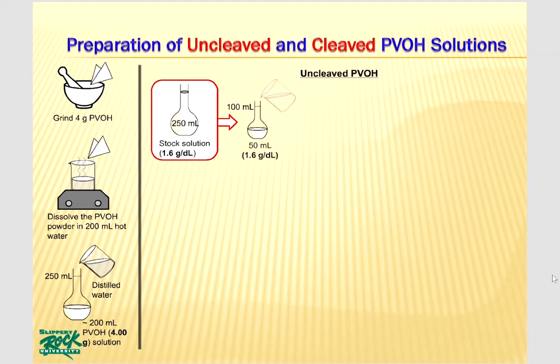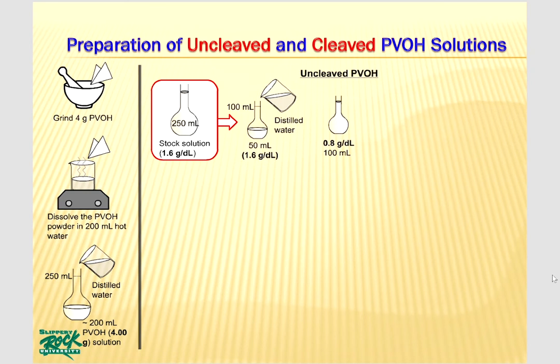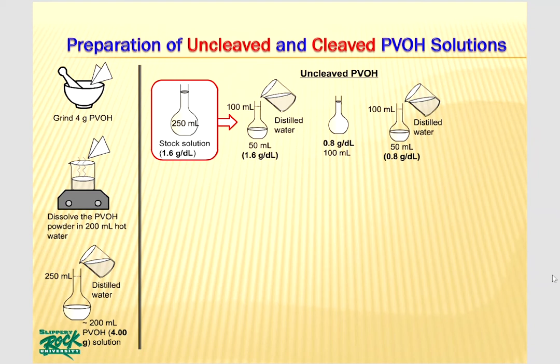The next step is to transfer 50 mL of stock solution into a 100 mL volumetric flask. Add distilled water up to the mark and mix by slowly inverting the solution a few times. The concentration of the new solution is half of the stock solution concentration, which is 0.8 grams per deciliter. The next step is to transfer 50 mL of this solution into another 100 mL volumetric flask, with the remaining 50 mL retained.